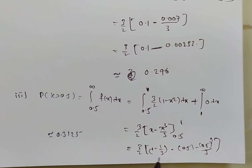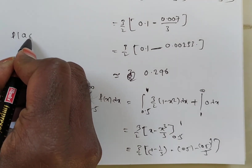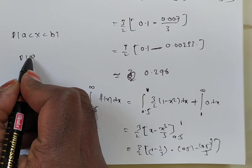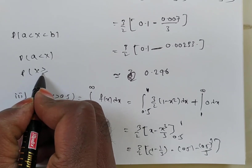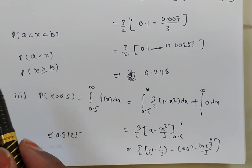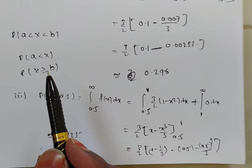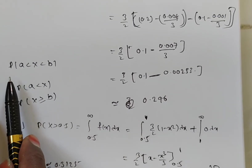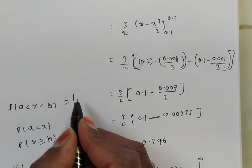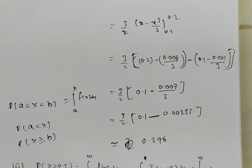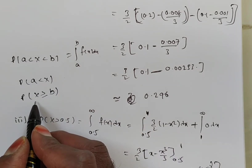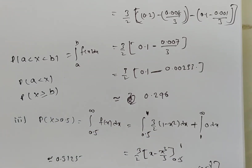In summary: if the function is directly given, we can find probabilities like P(a ≤ X ≤ b), P(X < a), or P(X > b) directly using integration. If the function has an unknown constant k, we use the condition that total probability equals 1 (integral from minus infinity to infinity of f(x) dx equals 1) to find k. Then for any probability P(a < X < b), integrate f(x) from a to b, and for P(X > b), integrate from b to infinity.